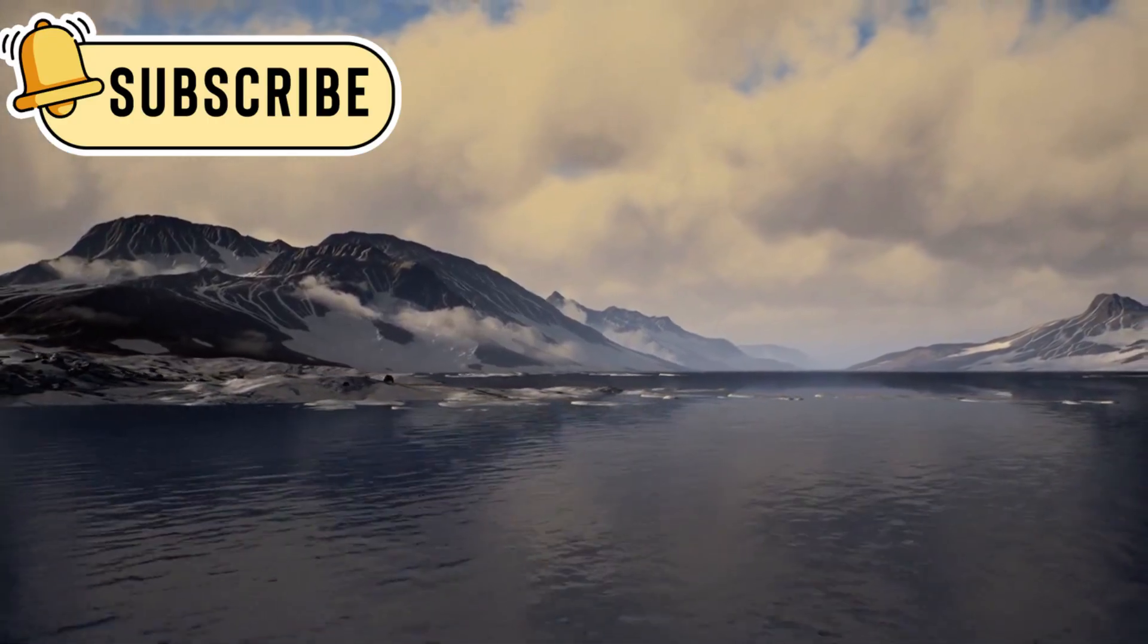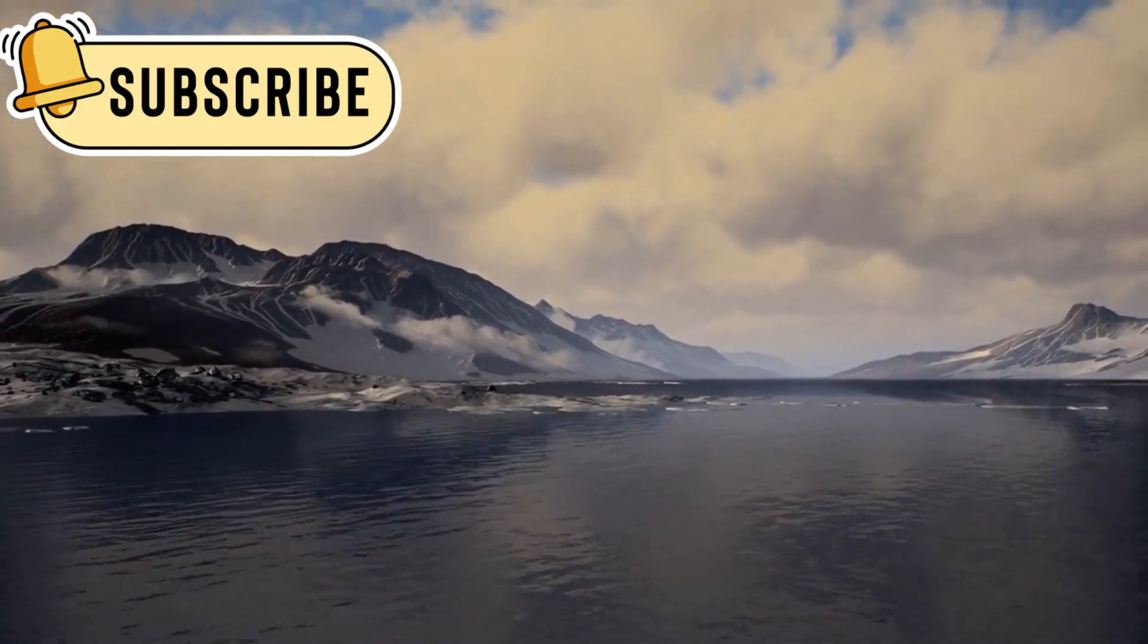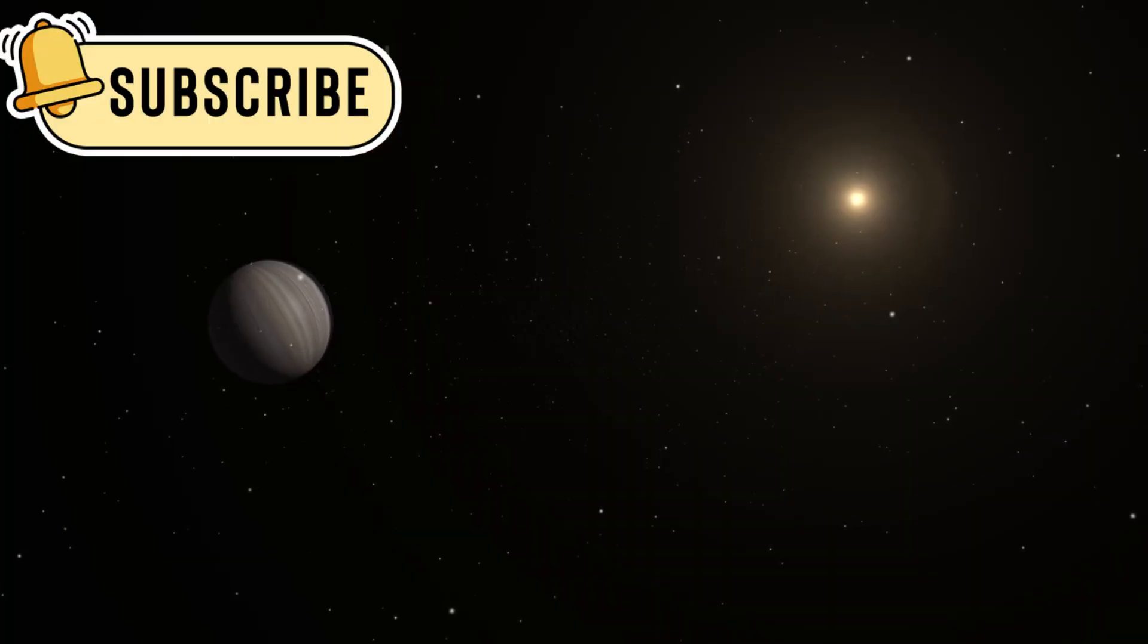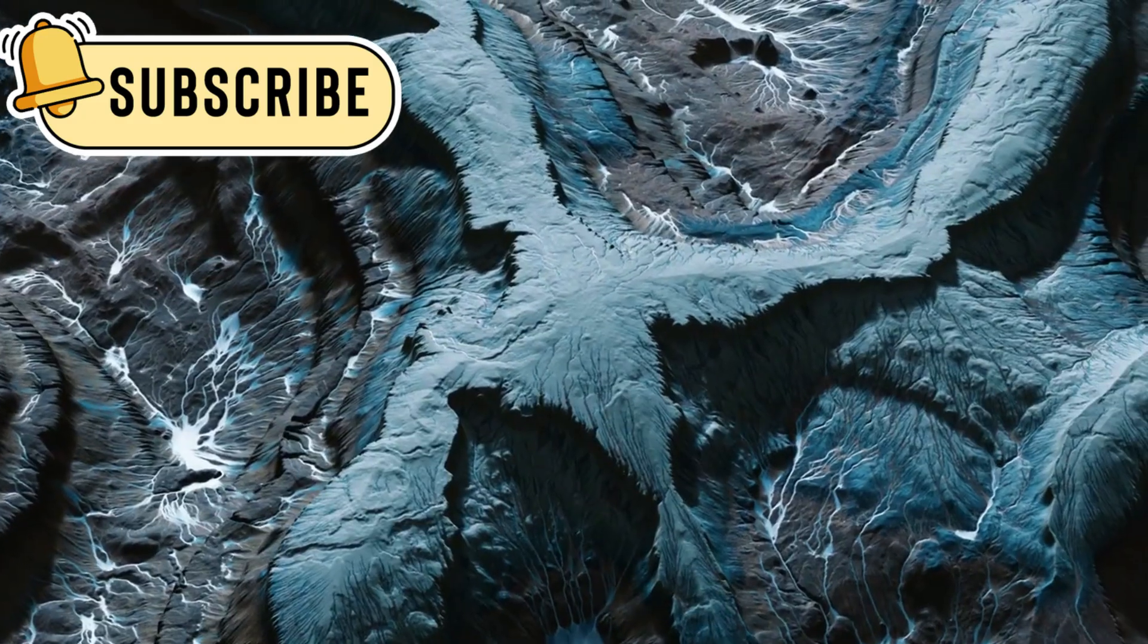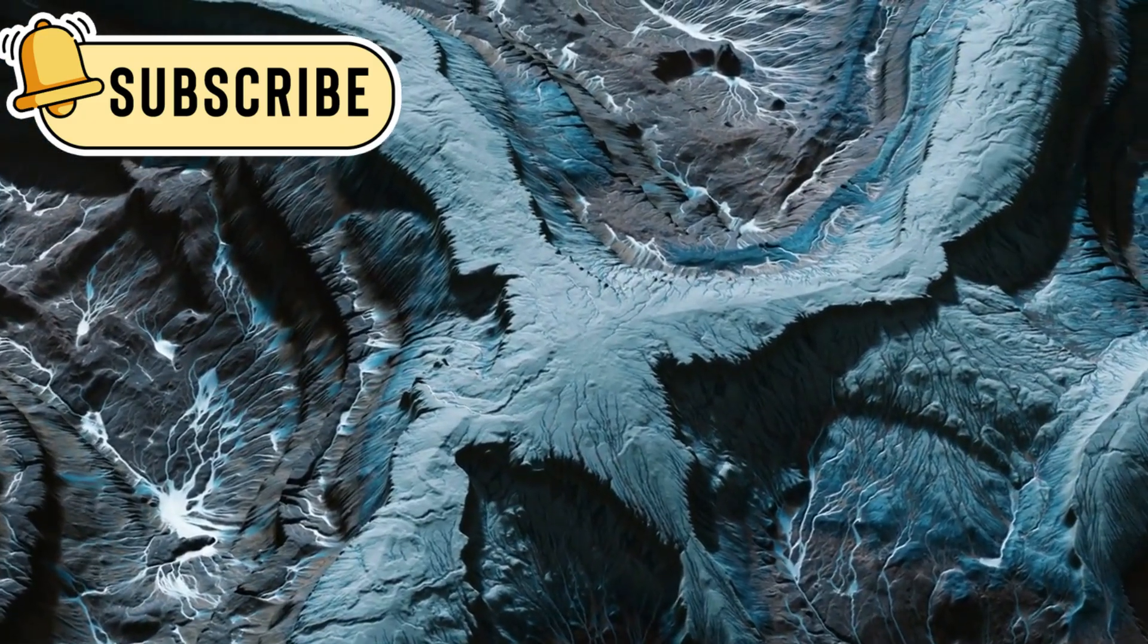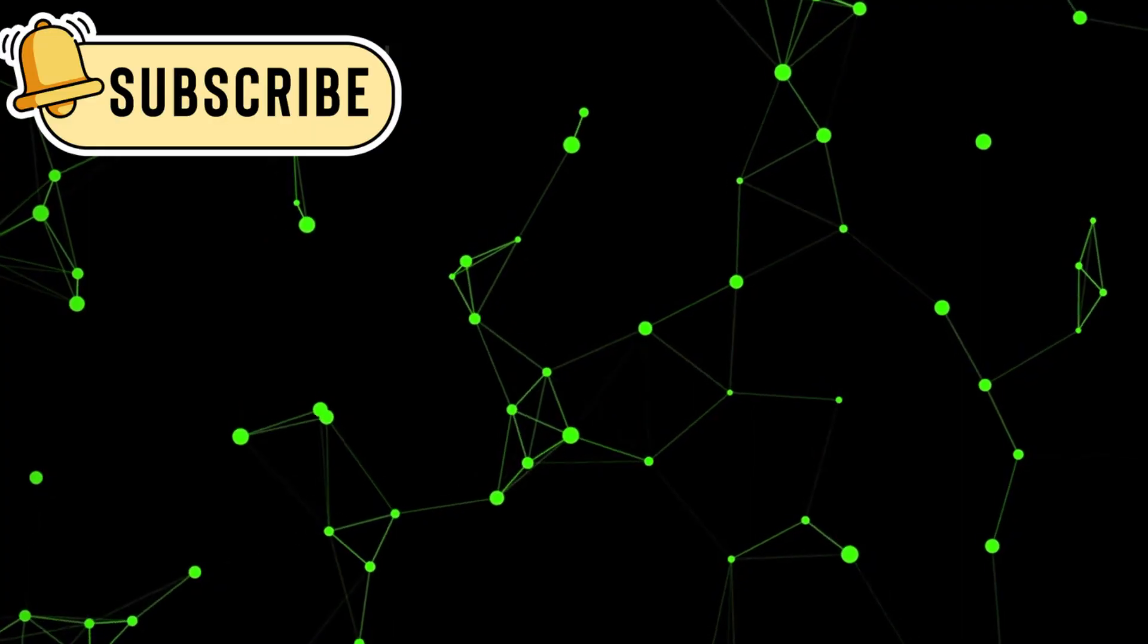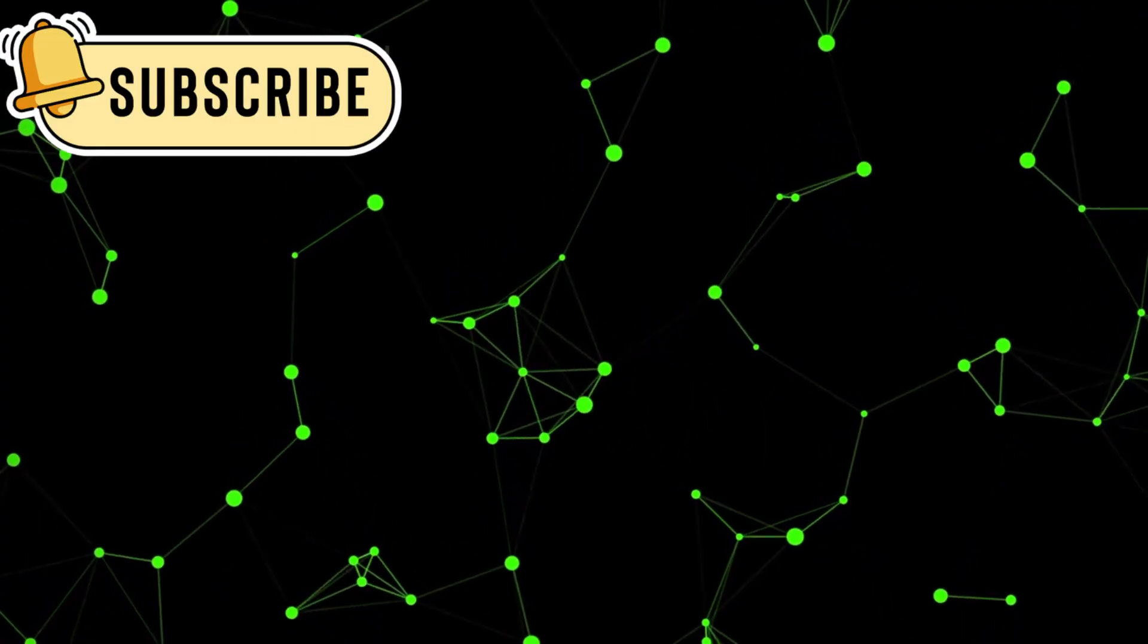Pluto's surface is also marked by massive ice mountains, stretching as high as some of Earth's tallest peaks. These features were never expected on such a small, cold planet. This kind of dynamic landscape challenges old ideas about how small celestial bodies work. It proves that distance from the Sun doesn't mean a world is inactive.